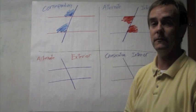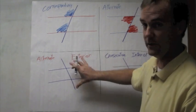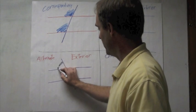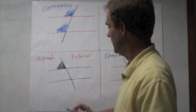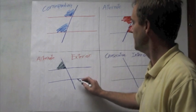Alternate exterior, alternate to the transversal, exterior to the two lines. So, if I started with this one on this side. Somebody quick point to the alternate exterior angle on this one. Down here.